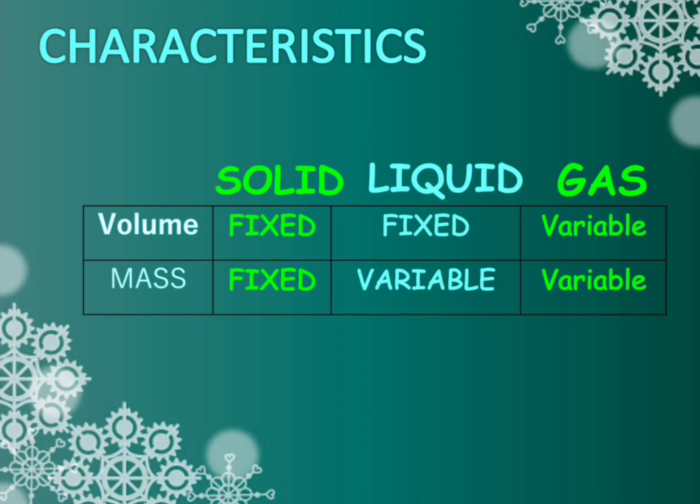For liquids, the volume is fixed and the mass is variable. Because when you pour a liquid in a glass, it takes the shape of the glass.